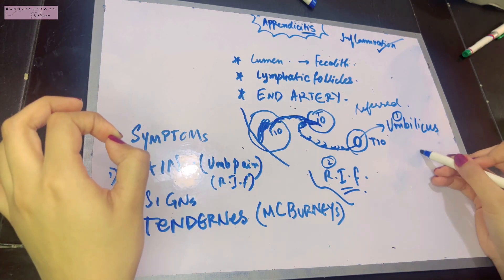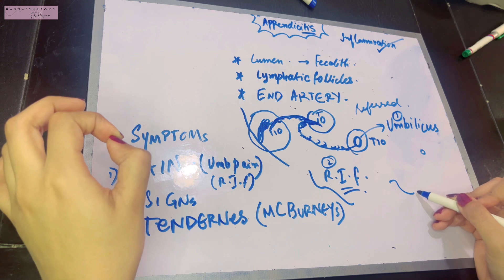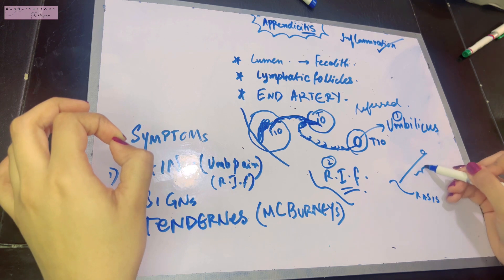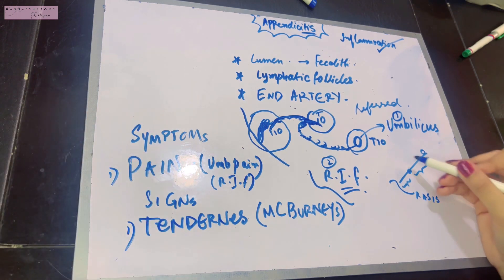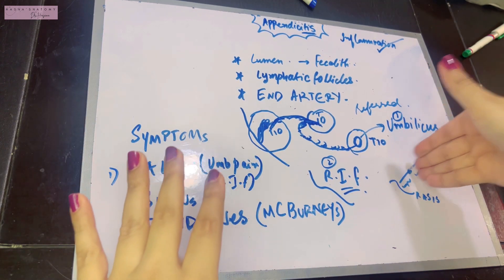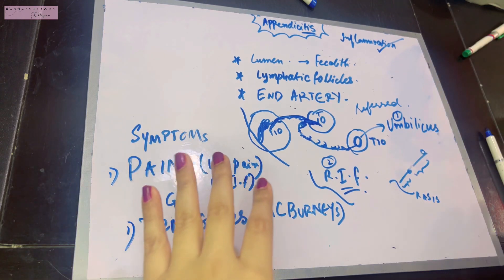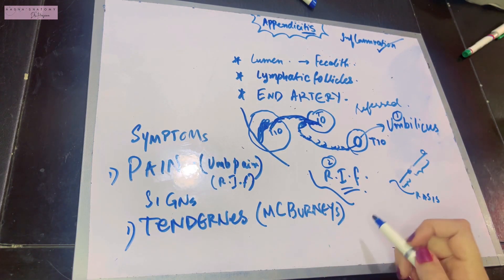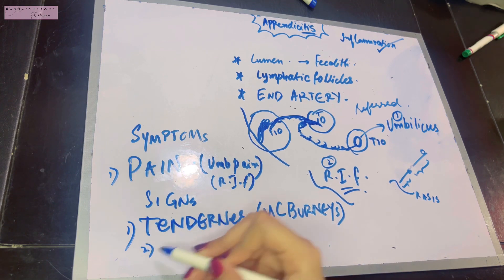The tenderness is felt at McBurney's point, which we discussed in our previous video. McBurney's point is a point lying midway between the right anterior superior iliac spine and the umbilicus. You draw a line; the junction of the medial two-thirds and lateral one-third is McBurney's point. If you suspect appendicitis and palpate this point, the person might scream—that's tenderness.